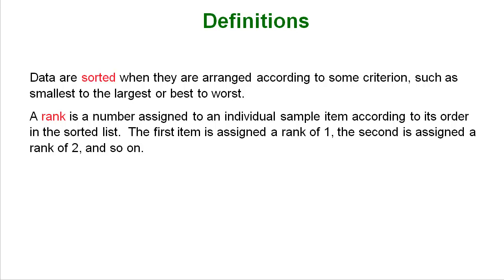In order to do this rank test the first thing you have to do is sort your data. When your data is all sorted, arranged in some order usually smallest to largest or best to worst, you assign a rank, a number, to each item in your sample. The first item is given a rank of 1, the second a 2, and so on until the last one. So you always rank them from 1 to n, n being the size of your sample.